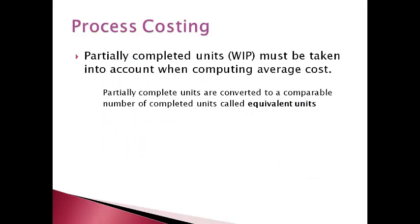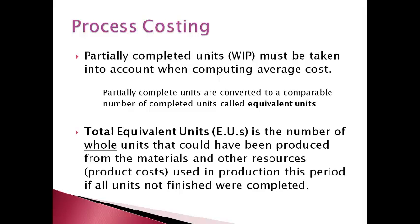A company that mass produces will have partially complete units at the end of the period. The partially complete units must also be considered when determining the average cost of each unit. Partially completed units are converted to total equivalent units — the number of units that would have been produced if all units were totally finished, given the total product cost used during the period, are referred to as equivalent units.